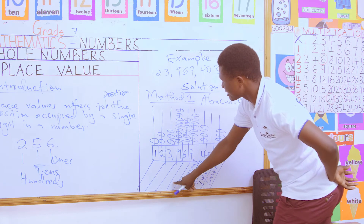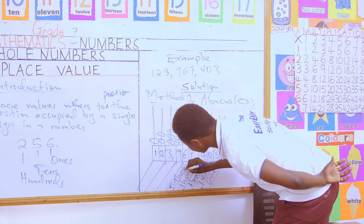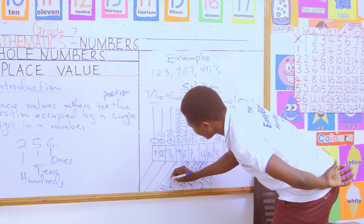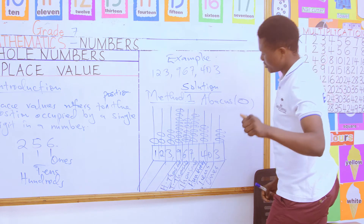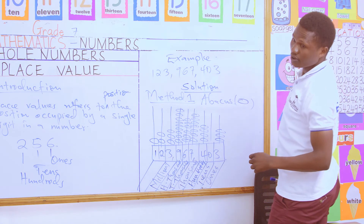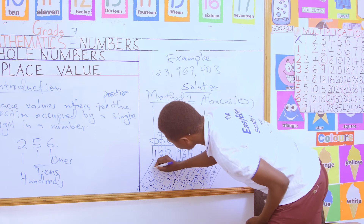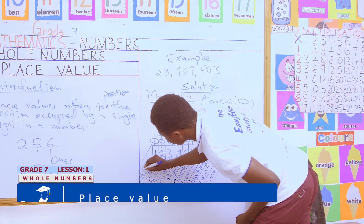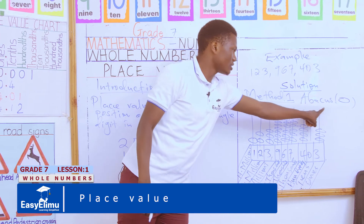Continuing: the next digit's place value is tens of thousands — I'll use capital T then write 'thousands.' Next is hundreds of thousands — capital H then 'thousands.' Then we have millions, followed by tens of millions — capital T then 'millions.' Finally, the last digit, which is 1, has a place value of hundreds of millions. That completes method one.